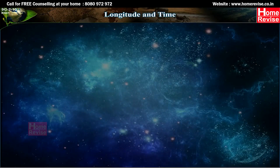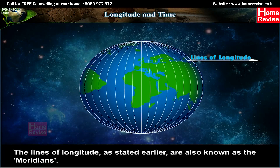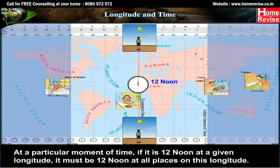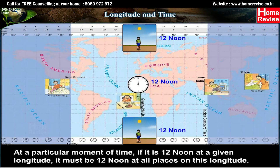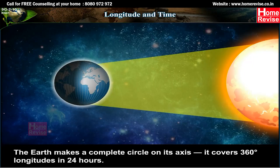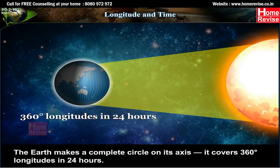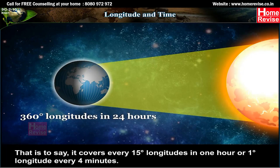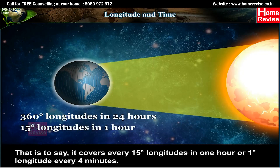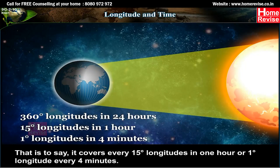Longitude and Time: The lines of longitude, also known as meridians, relate directly to time. At a particular moment, if it is 12 noon at a given longitude, it must be 12 noon at all places on that longitude. The earth makes a complete circle on its axis, covering 360 degrees of longitude in 24 hours — that is, every 15 degrees of longitude in 1 hour, or 1 degree of longitude every 4 minutes.